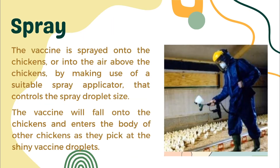With the spray vaccination method, the vaccine is sprayed onto the chickens or into the air above them using a suitable spray applicator that controls the spray droplet size. The vaccine falls onto the chickens and enters the body of other chickens as they pick up the shiny vaccine droplets.